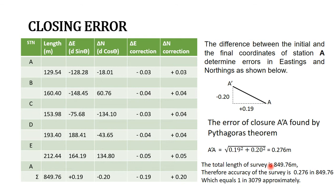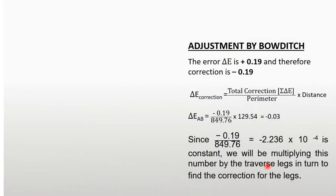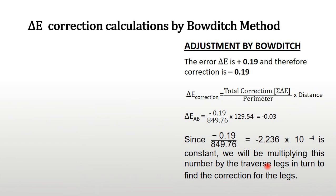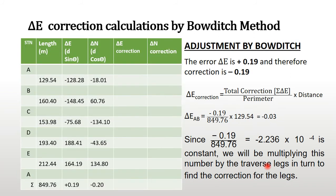We assume we are within the specified accuracy. Now we will go to the next stage where we are calculating the correction for the change in eastings for each and every traversy length by the Bowditch method. As you would see, for the change in eastings we worked out the error to be 0.19. That is our error after adding all the change in eastings, which gave us an error of 0.19.